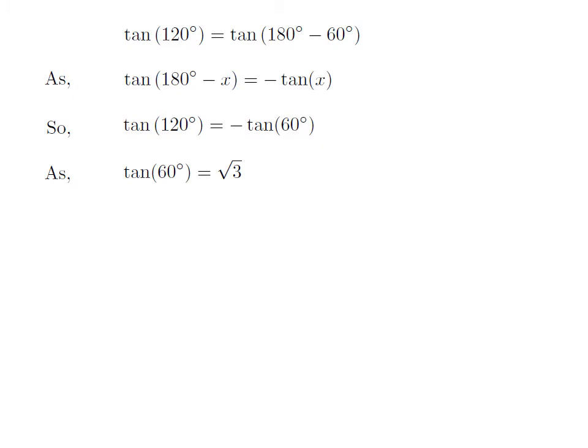We know the value of tangent of 60 degrees is equal to square root of 3. So, tangent of 120 degrees is equal to minus square root of 3.